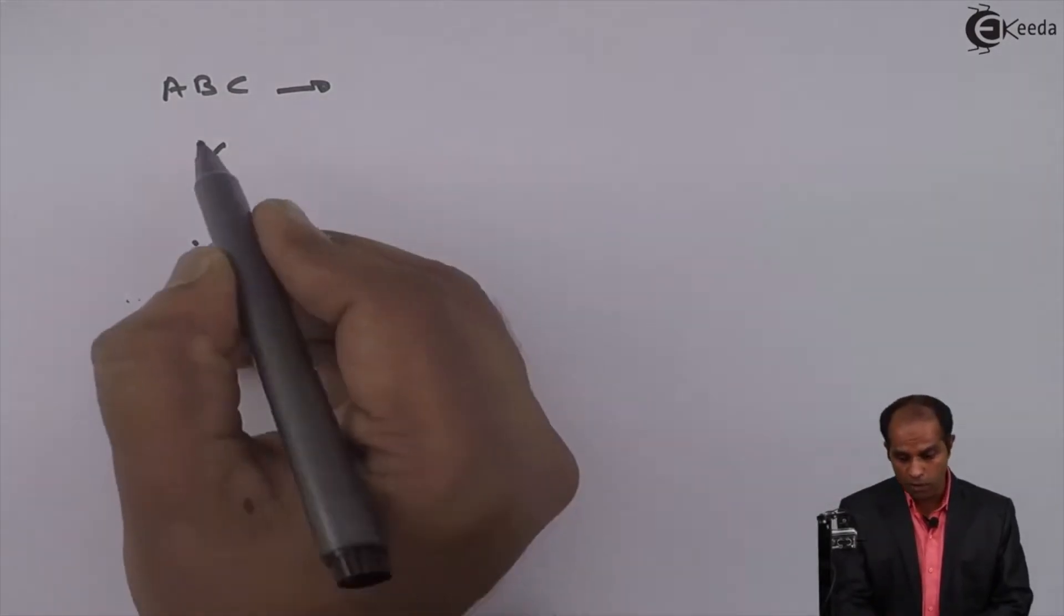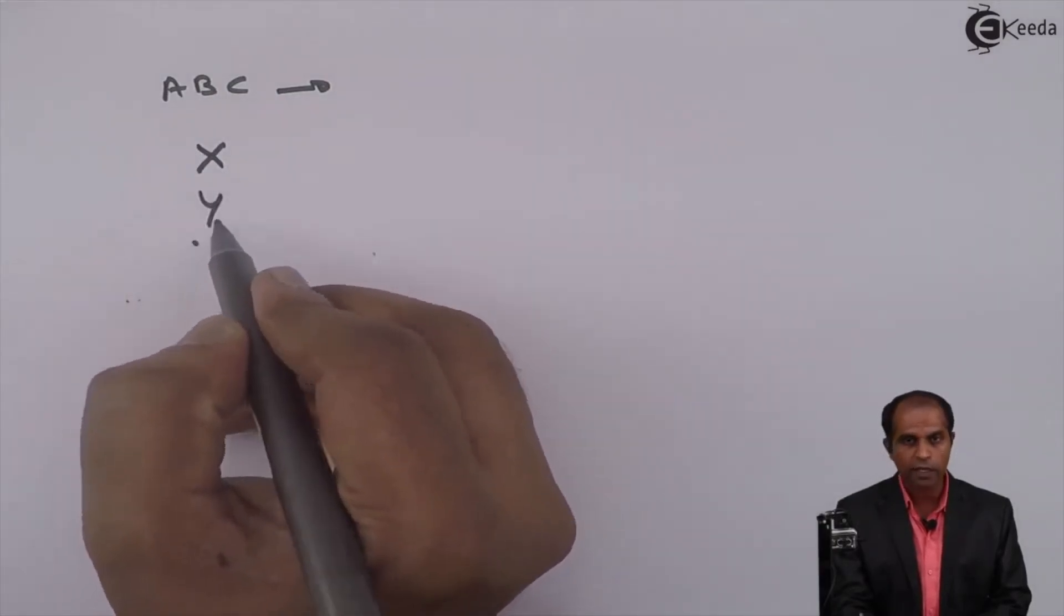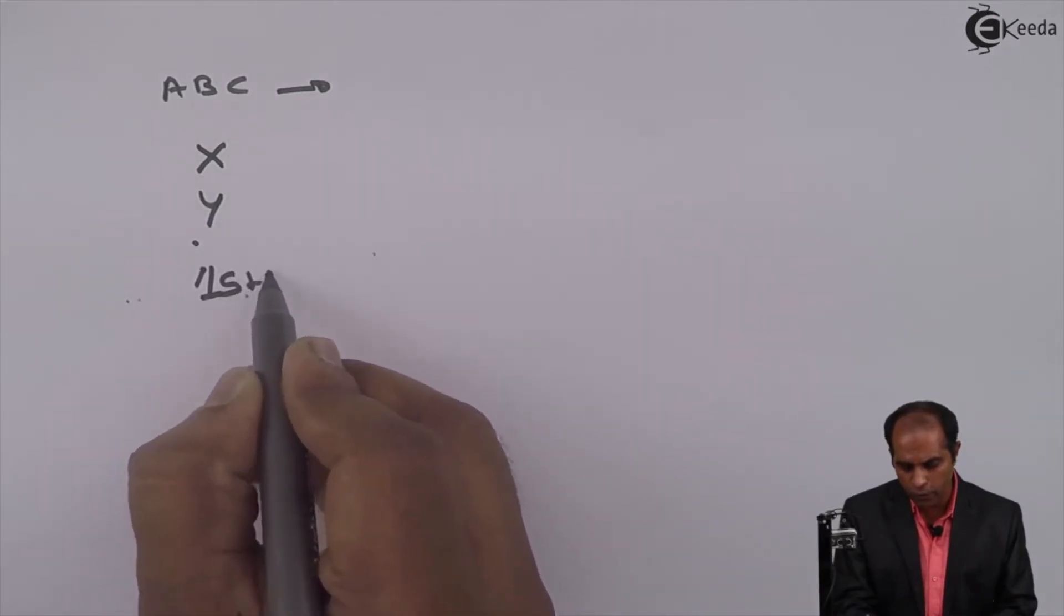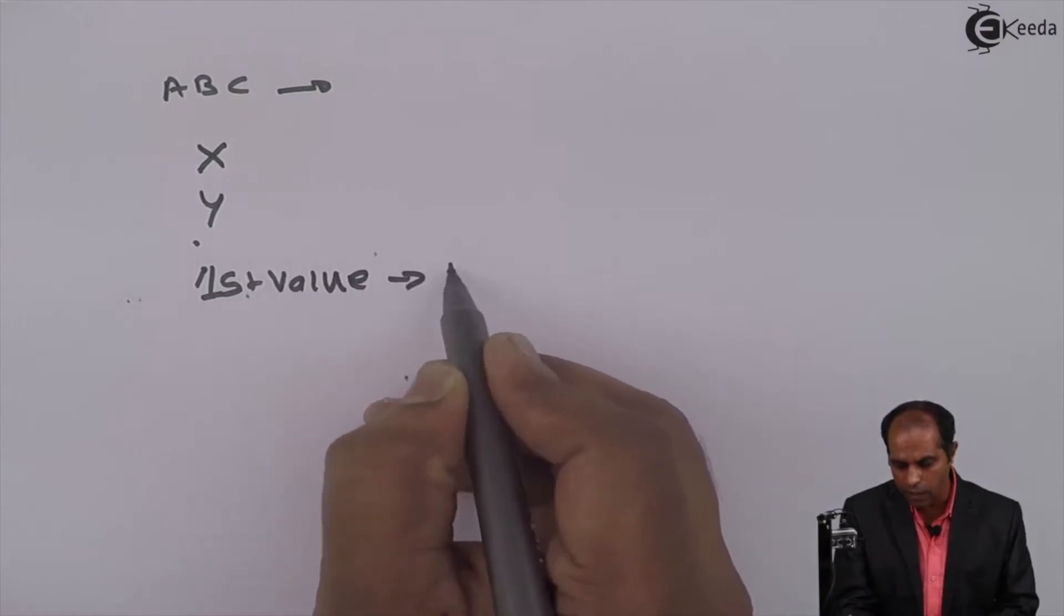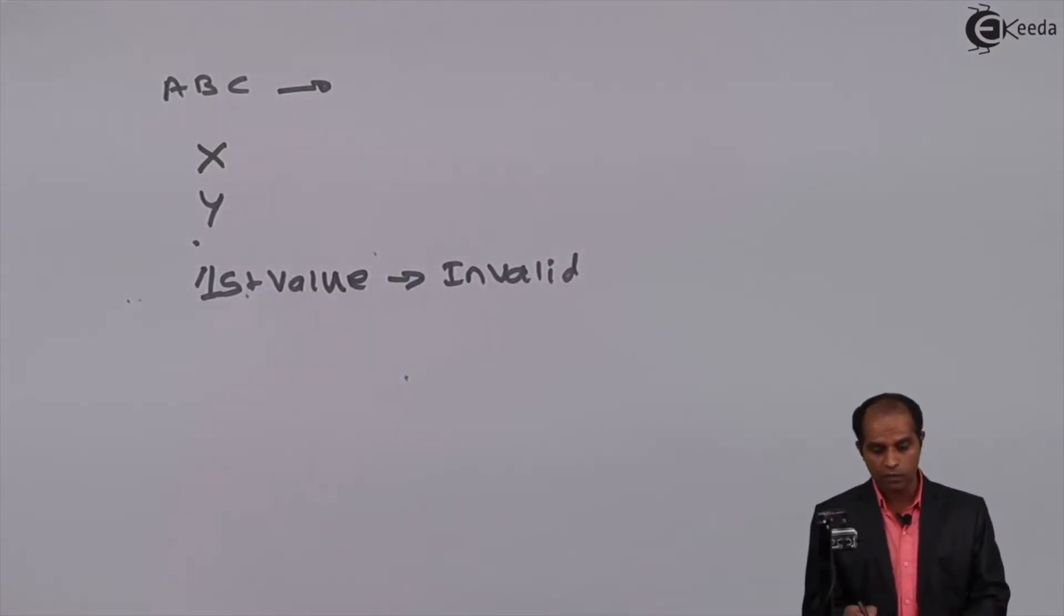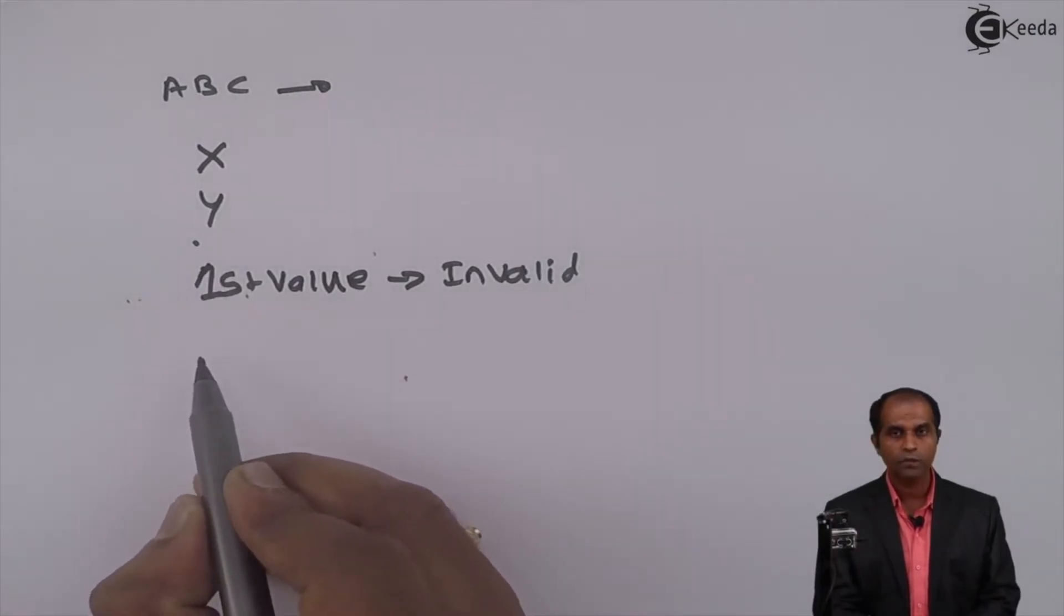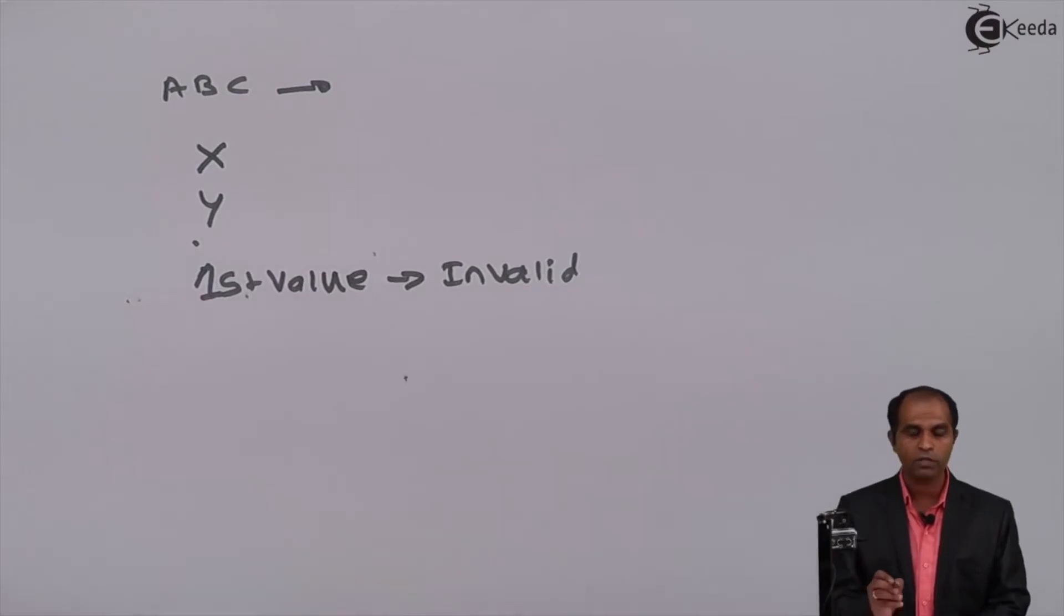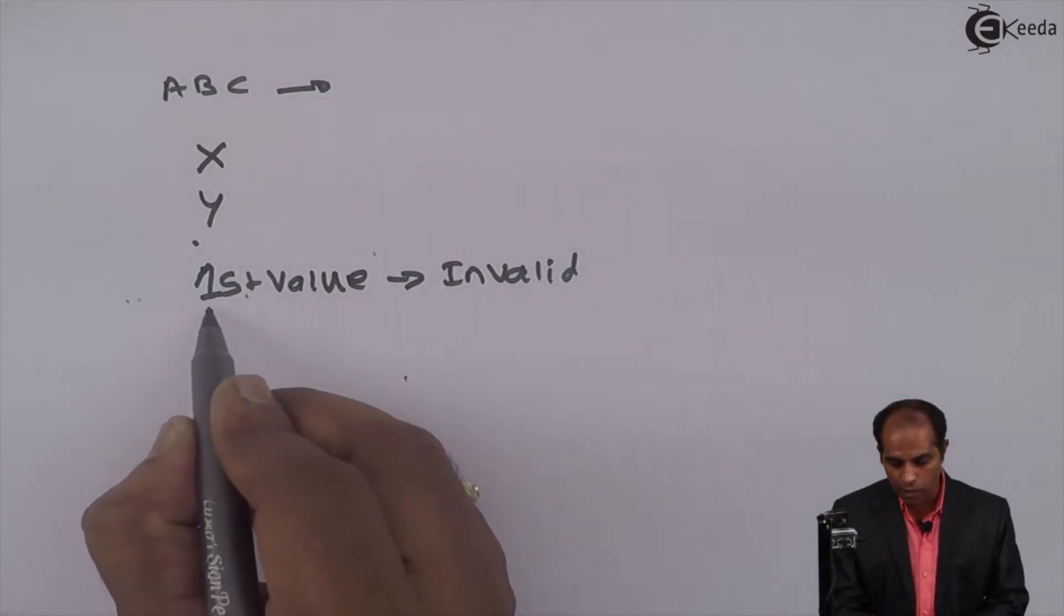But this will be an error. Suppose if I write a quantity as 1stvalue, this is invalid. Now you can identify why it's invalid. Let's look at the rules: it should be a combination of alphabets and digits—yes, it is. The second rule says it should start with an alphabet, but here I'm starting with a digit. Hence, this is invalid.